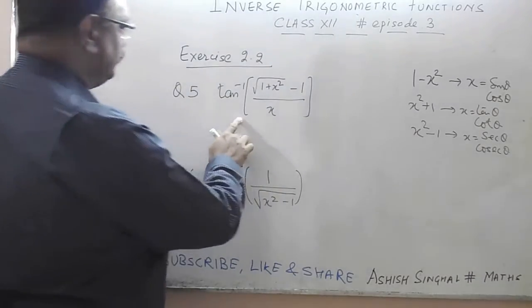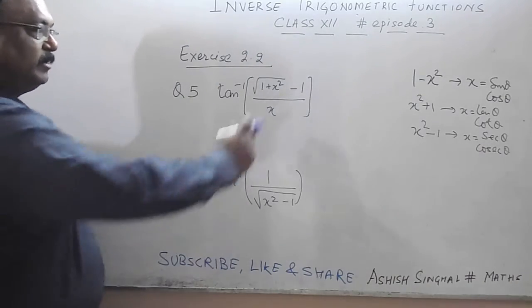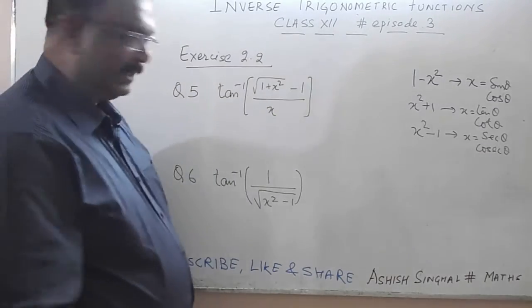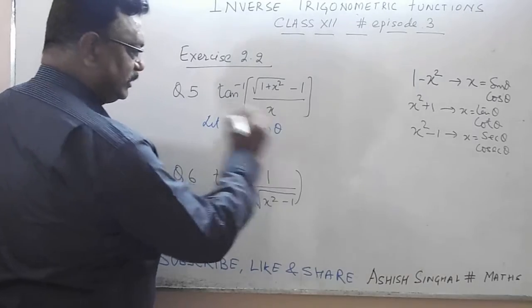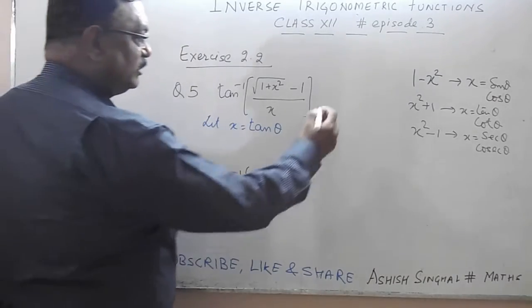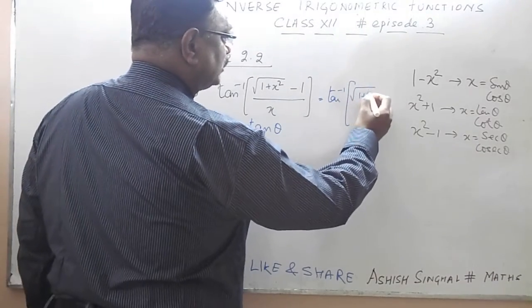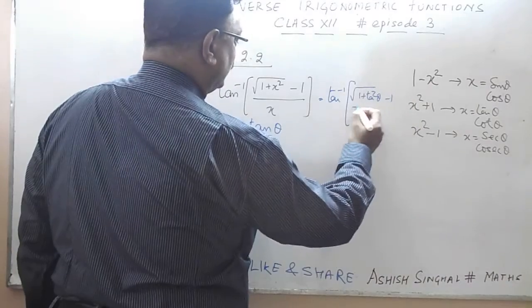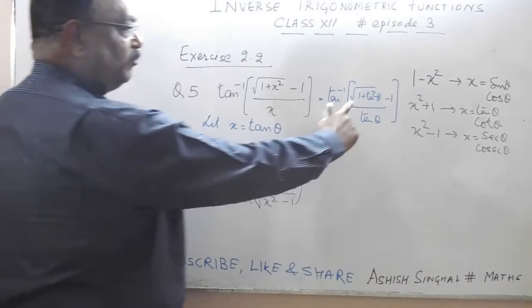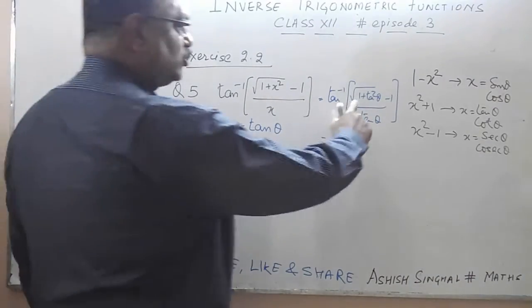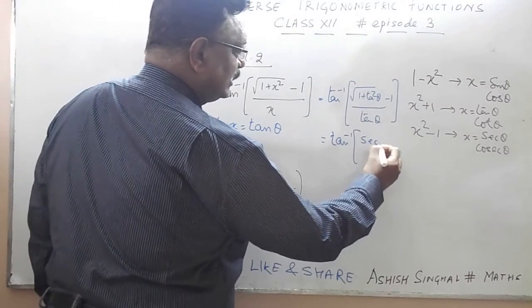Using these substitutions, let us simplify Question 5: tan inverse of (√(1 + x²) − 1) / x. Let x = tan θ. Substituting, we get tan inverse of (√(1 + tan²θ) − 1) / tan θ. Since 1 + tan²θ = sec²θ, and √(sec²θ) = sec θ, this becomes tan inverse of (sec θ − 1) / tan θ.